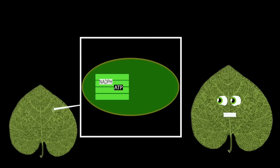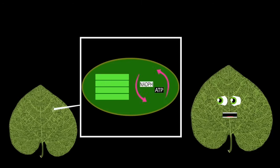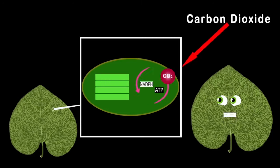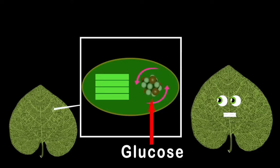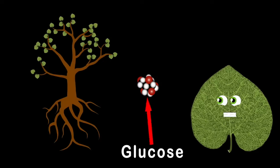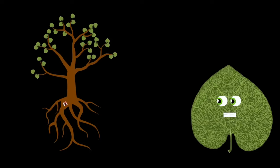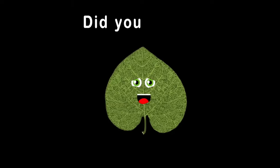These energies are then passed on to the stroma, and they're mixed with carbon dioxide to make glucose sugar. This sugary glucose is made for plants to eat — it is their source of food and helps grow fruit for you and me.